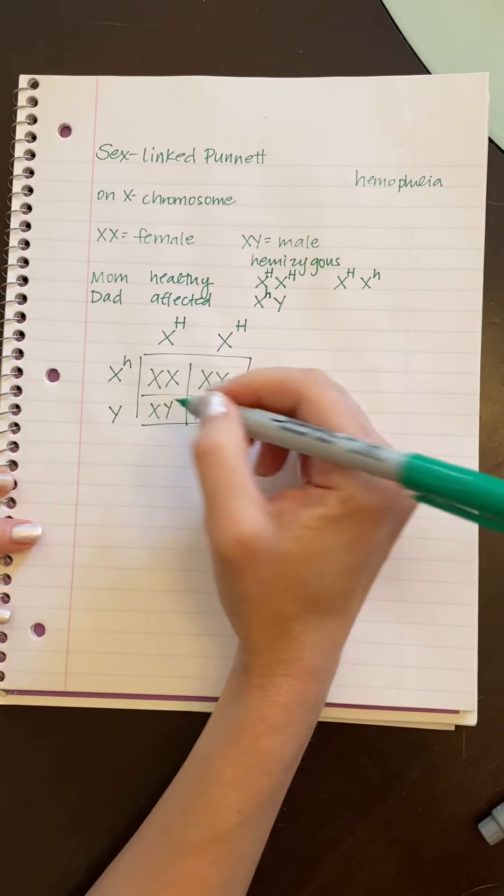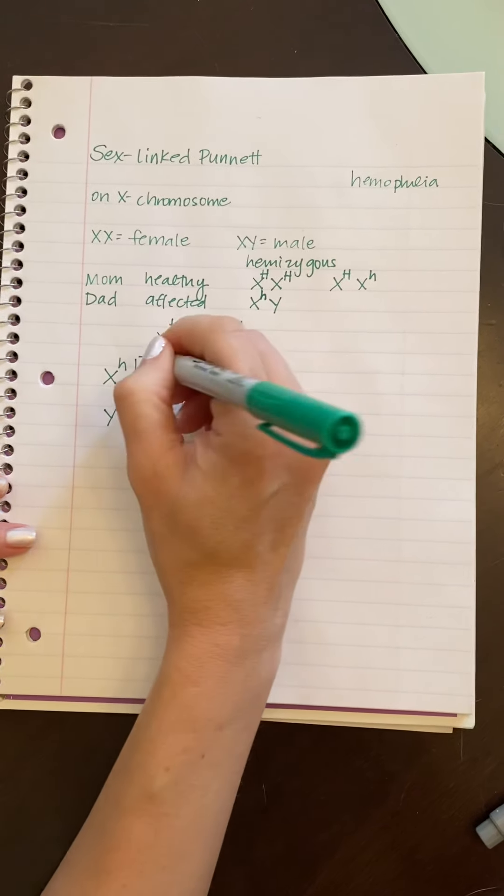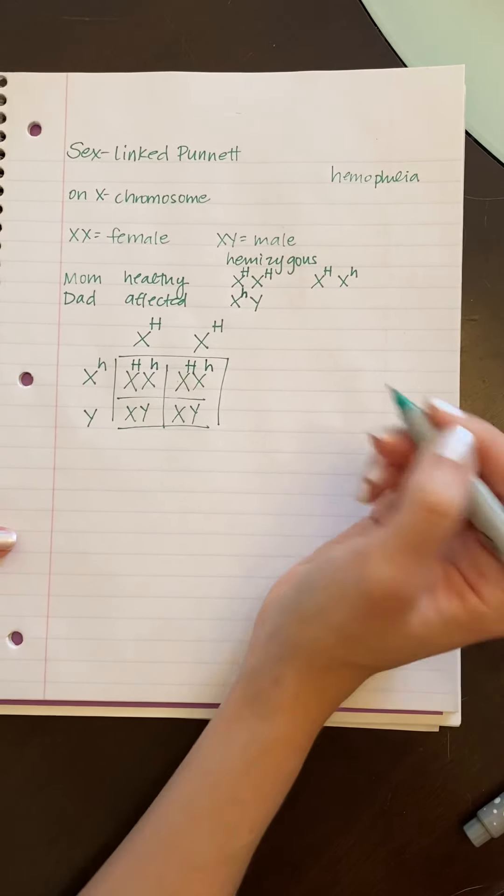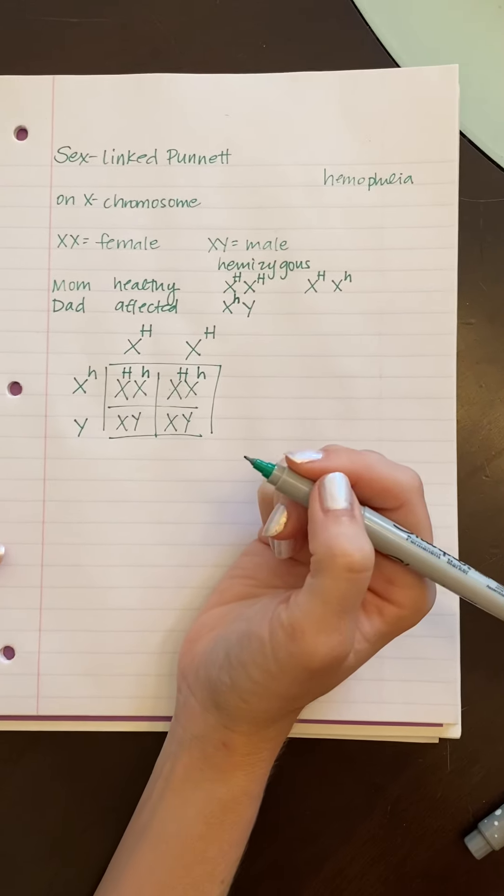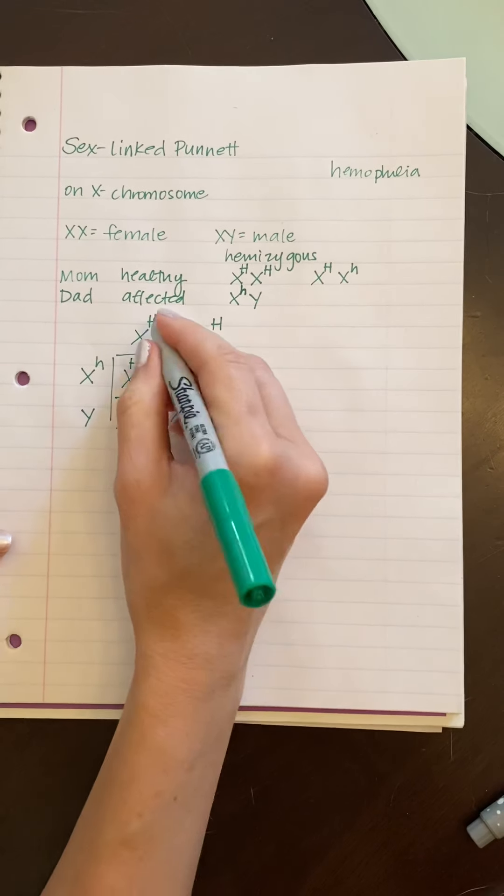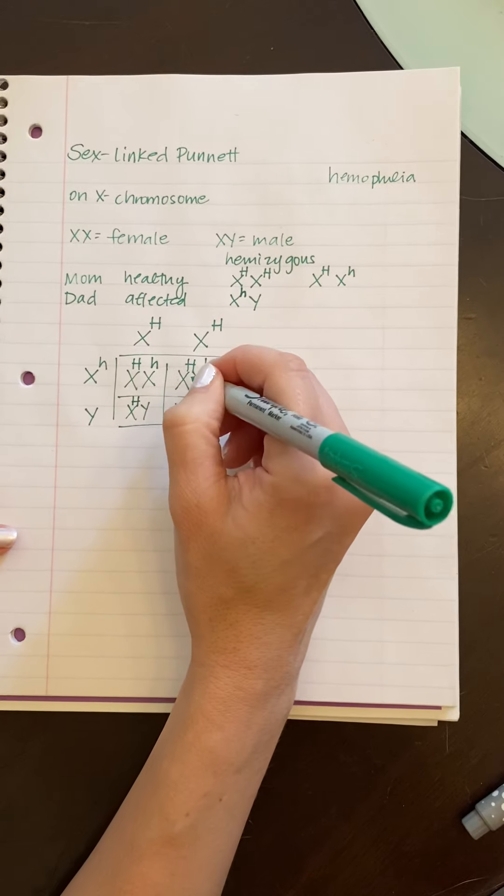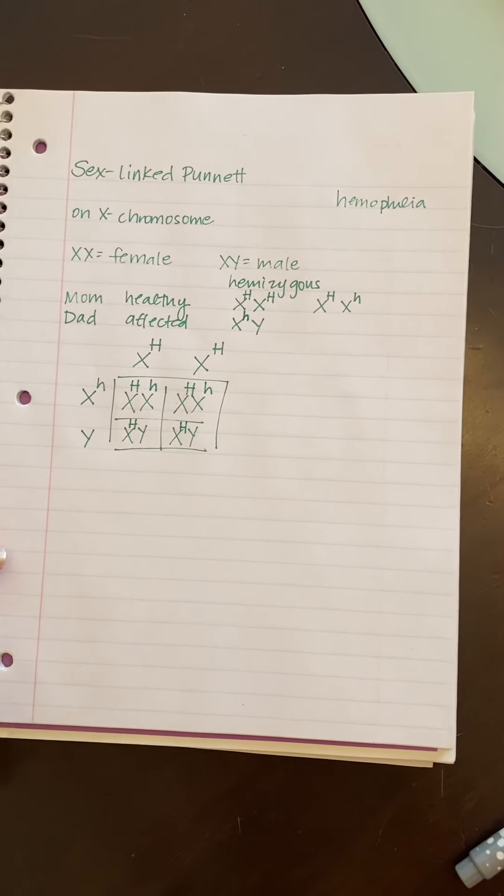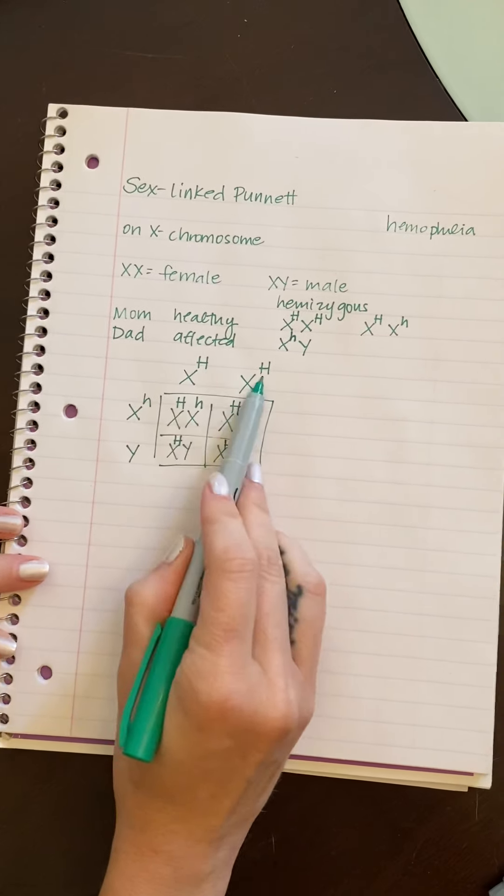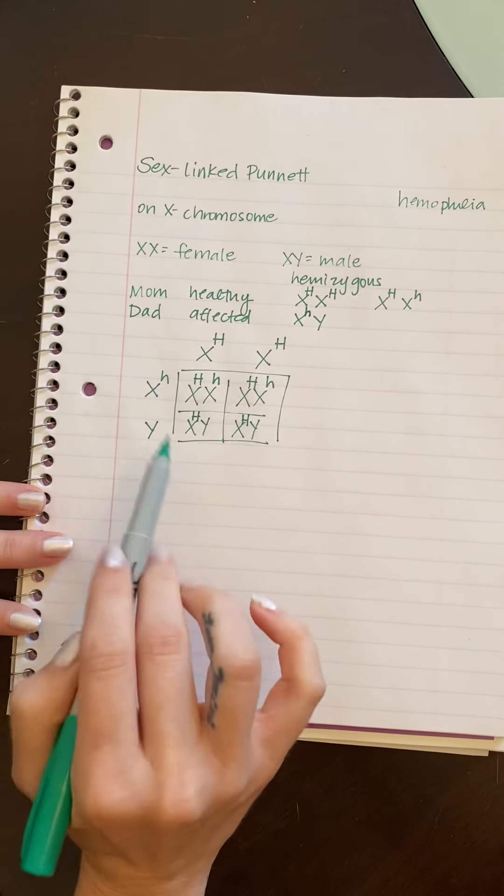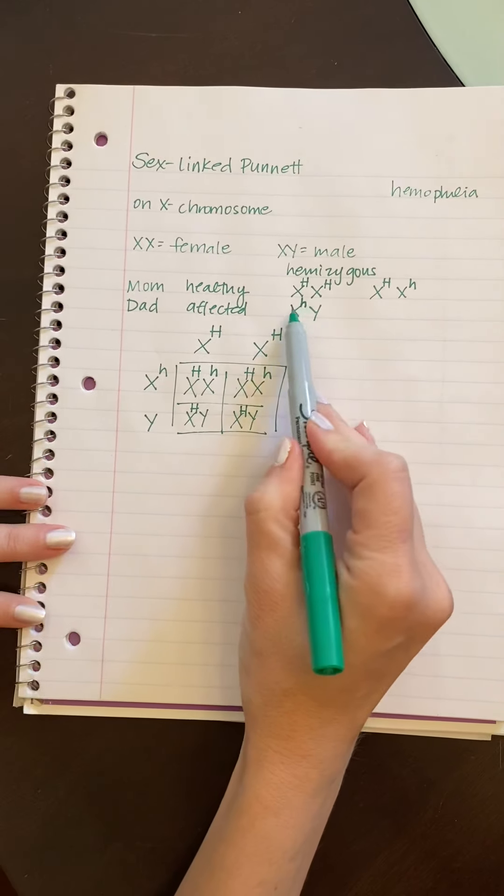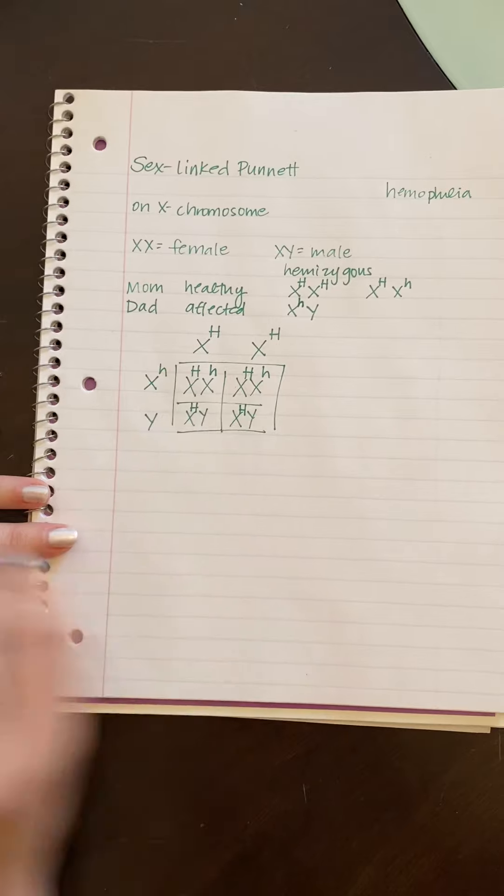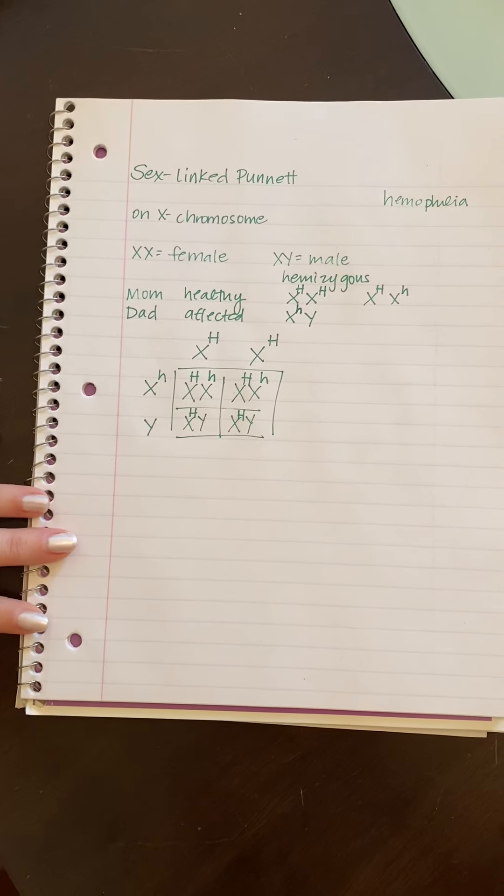Now we assort all of the different alleles. So here, we're going to have this mixture. Here, remember, there's only the X that has the letter. So we're going to bring down the one dominant here and we're going to bring down the one dominant here. What we find is that if mom is completely dominant, we do not have a chance of creating an offspring that is completely recessive. Every single box has a dominant so they would not be able to have a hemophilic child.